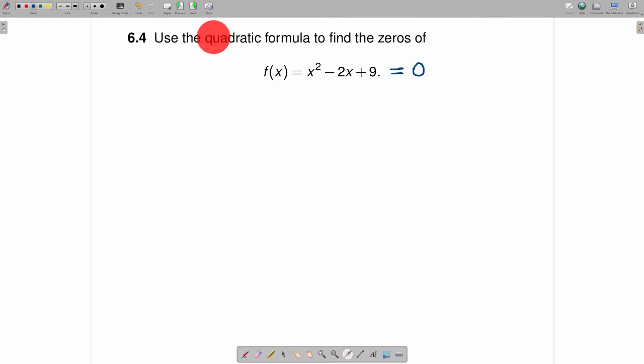The question also says to use the quadratic formula, and here is the quadratic formula. It is probably worth memorizing: negative b plus or minus the square root of b squared minus 4ac divided by 2a.